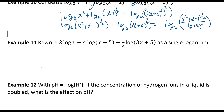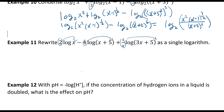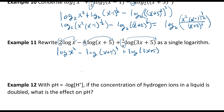The next one is: rewrite 2 times log x minus 4 times log of x plus 5, plus one-half times log of 3x plus 5, as a single log. Each coefficient becomes a power: log of x squared, minus log of x plus 5 to the 4th, plus log of 3x plus 5 to the one-half.